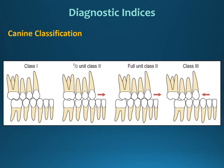Canine classification is based upon the anteroposterior position of the canines. In Class I, the upper canine occludes in the embrasure between the lower canine and the lower first premolar. If the upper canine is more anterior to this Class I relation, this is Class II canine relationship. If the upper canine is more posterior to the Class I relation, this is Class III canine relationship.